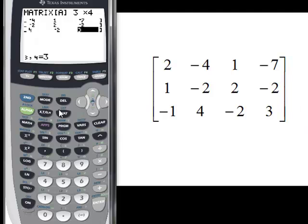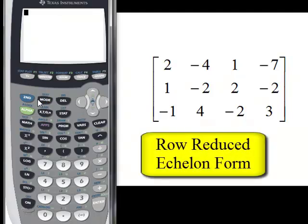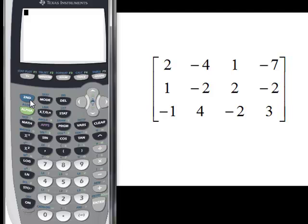So we've got everything entered in the same as we have it over here. Now we're going to get out of this because we need to do a matrix operation. Second quit. What we want to do is put that matrix in what's called row reduced echelon form, which will put ones across the diagonal and zeros every place else and give us our answers.